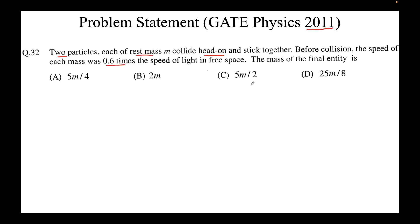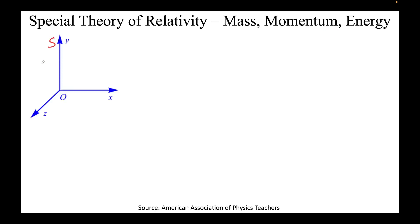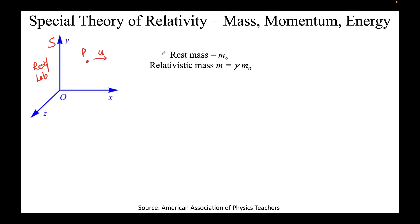Before we start solving this problem, let's have a quick recap of some relevant concepts. We have a frame S which is at rest — the rest frame, also referred to as the laboratory frame. In this frame, we have a particle P moving in the positive x direction with speed u. The rest mass of this particle is m-naught. The relativistic mass, given by small m, can be written as gamma times m-naught, where gamma is 1 over the square root of 1 minus u² over c². Since gamma is greater than 1, the relativistic mass is slightly increased.